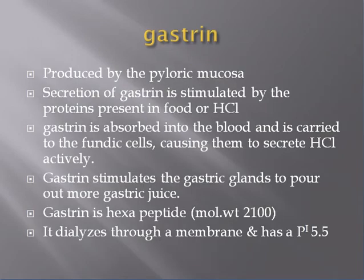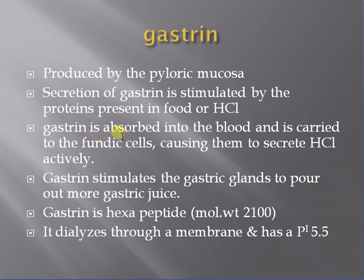First of all, we will discuss about gastrin. This gastrin is produced mainly in the pyloric mucosa. The secretion of gastrin is stimulated by the protein present in the food or HCl. Gastrin is absorbed into the blood and is carried to the fundic cells, causing them to secrete HCl.